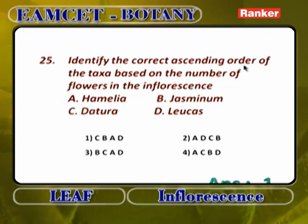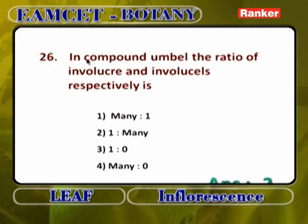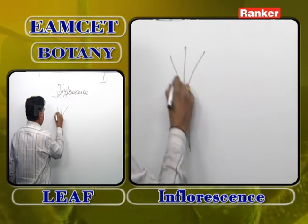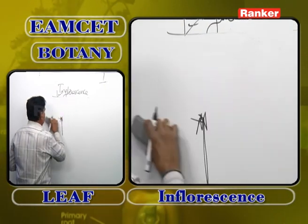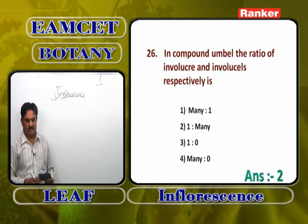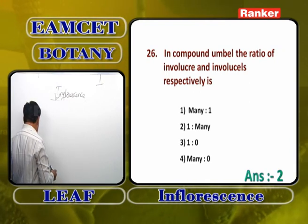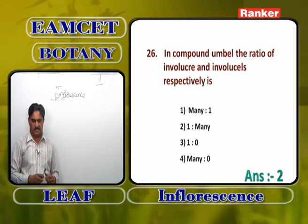Identify the correct ascending order of taxa based on number of flowers: C, B, A, D — datura (1 flower), jasminum (3 flowers), heliotrope (many, less than leucas), leucas (14). In a compound umbel, the ratio of involucre to involucell is 1 to many — involucre is only one, involucell may be many. Single flower-like racemose inflorescence is head inflorescence (capitulum) — this is a racemose inflorescence with sessile flowers that appears like a single flower, found in Asteraceae.